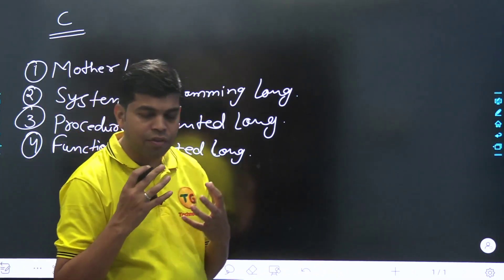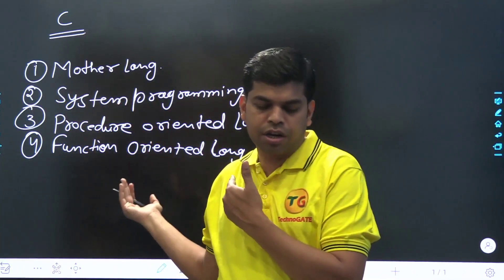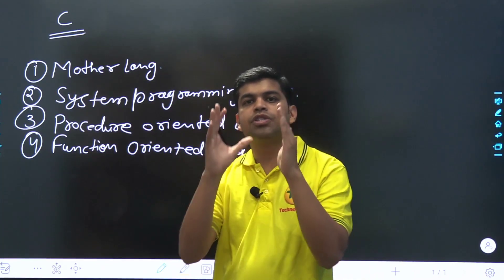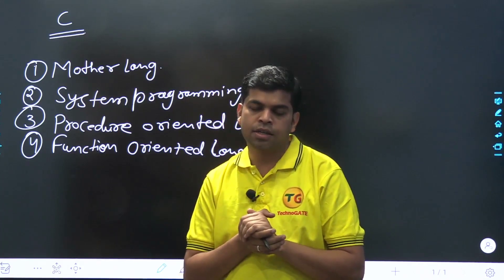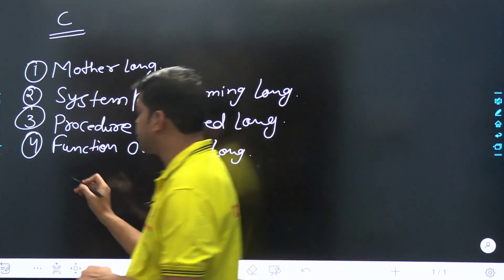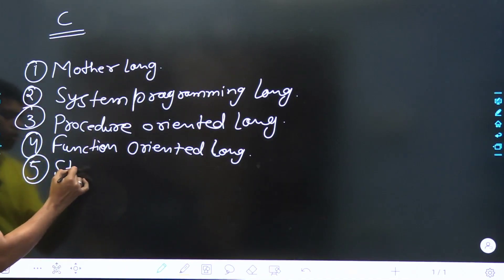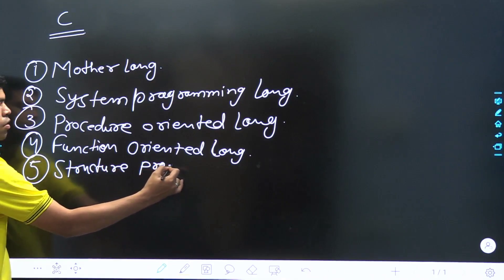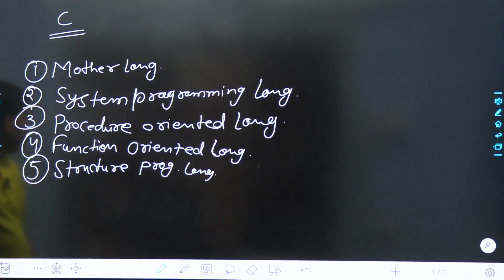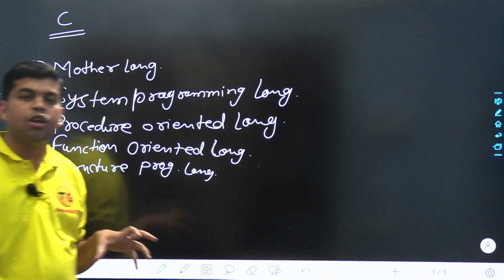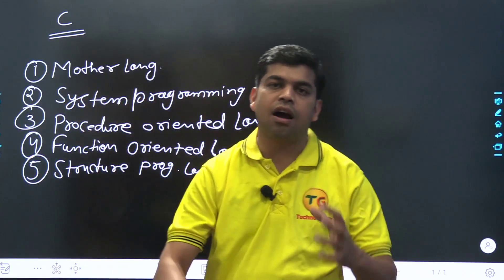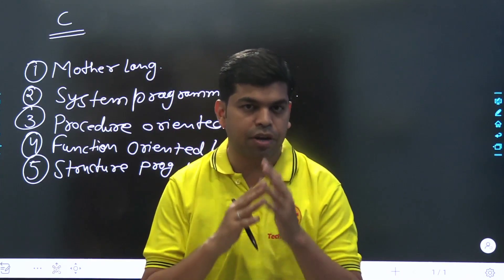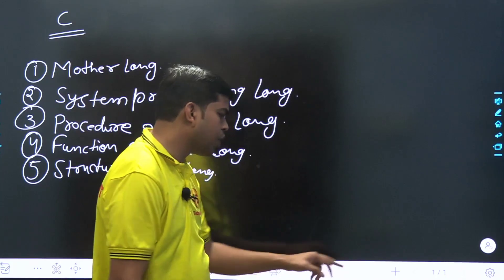C is also called a structure-oriented programming language. Why? Because we understand the flow charts and implement a structure. The code follows a particular format and particular structure, so it is called structure-oriented programming language.